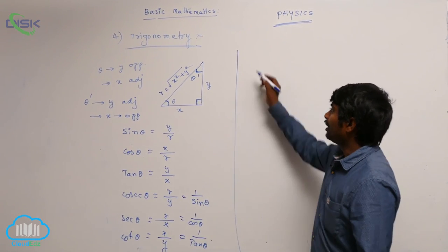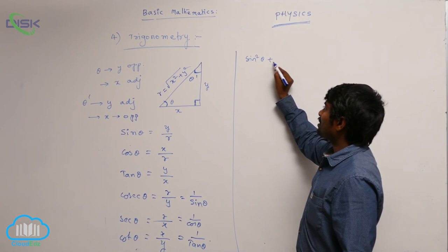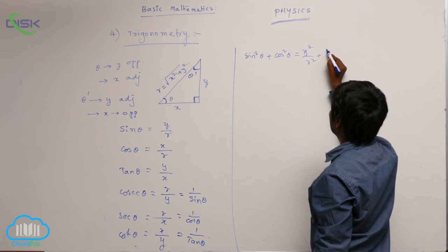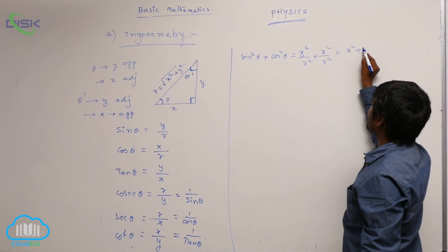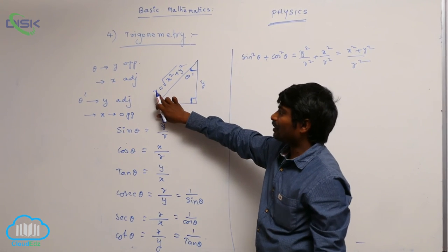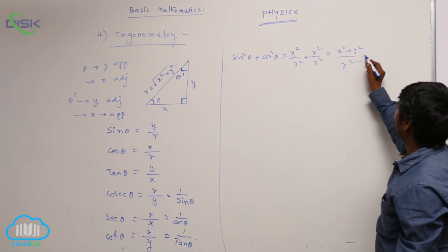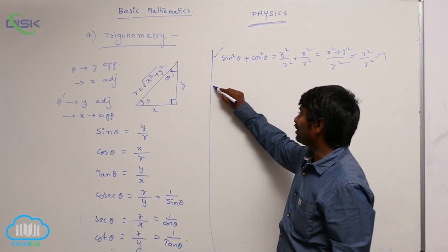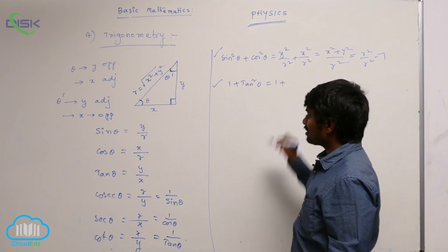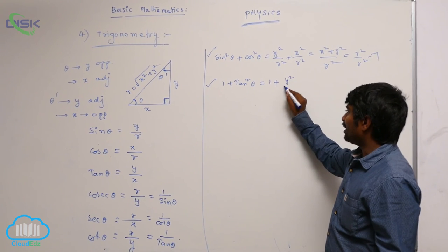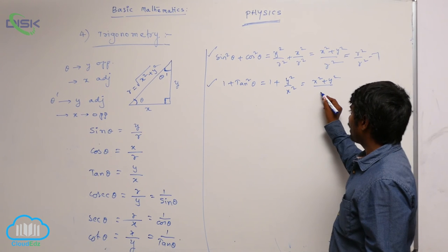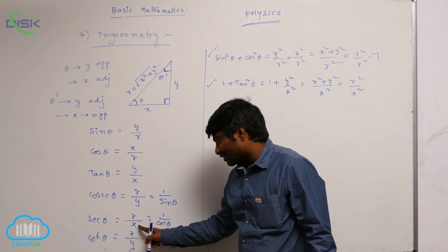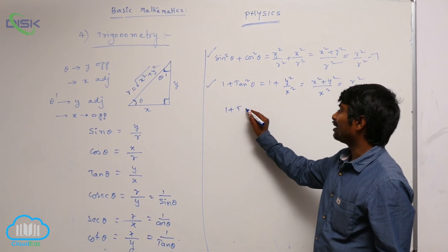One more thing: sin squared theta plus cos squared theta equals y squared by r squared plus x squared by r squared, which is x squared plus y squared by r squared. Since x squared plus y squared equals r squared, this gives r squared by r squared, which equals 1. So sin squared theta plus cos squared theta equals 1.